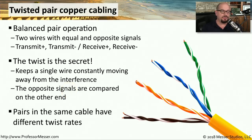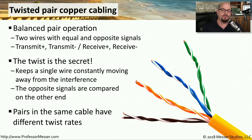One of the interesting characteristics of twisted pair cable is that the different pairs of cabling are twisted at different rates. This becomes really obvious when you get up to higher level categories, such as category 6. These different twist rates will also help in making sure that traffic is able to get through the network, even when there's interference.